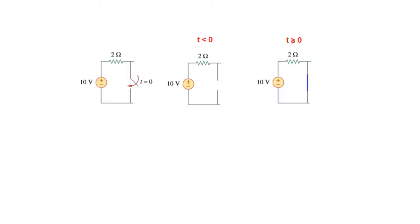Here is another one. Again, look at the direction of the arrow. This arrow is pushing this bar for closing, but at what time? At t is equal to 0. That means before t is equal to 0, this is open. So for t less than 0, this is open, and after t is equal to 0 or t greater than or equal to 0, this is closed because it is closing at t is equal to 0.